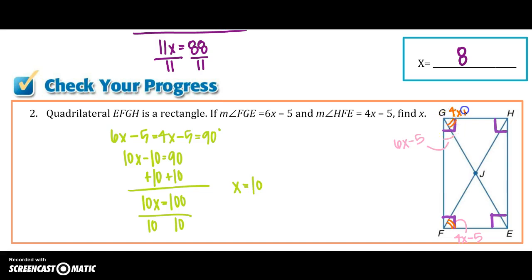You could also say, because this angle right here equals 6X minus 5, so does this part because of that isosceles triangle. And 6X minus 5 goes here.